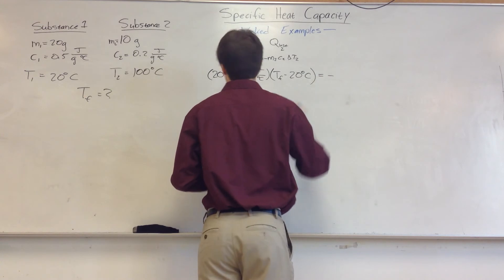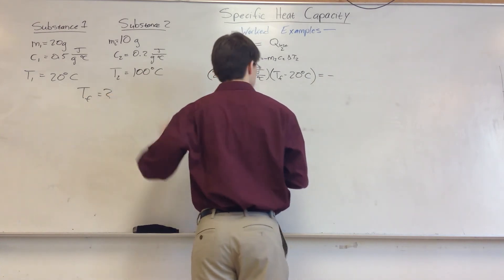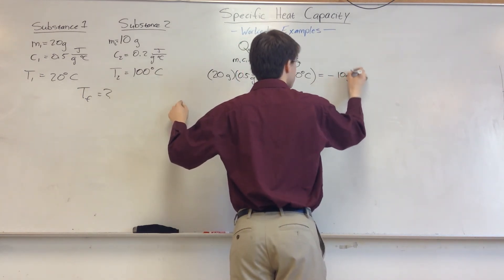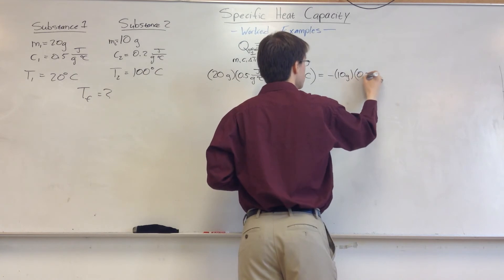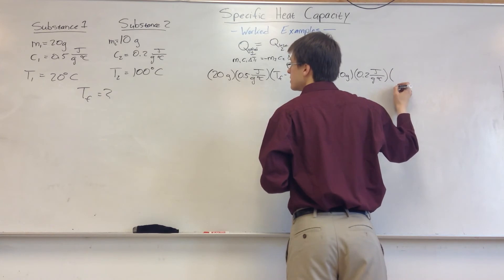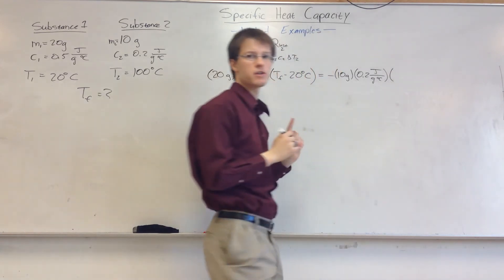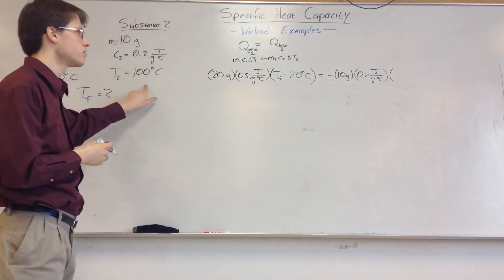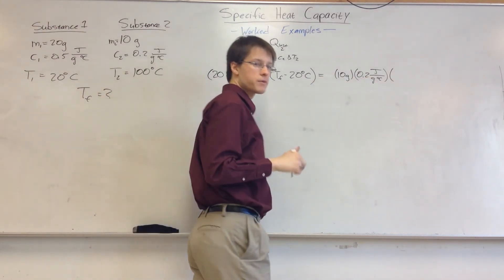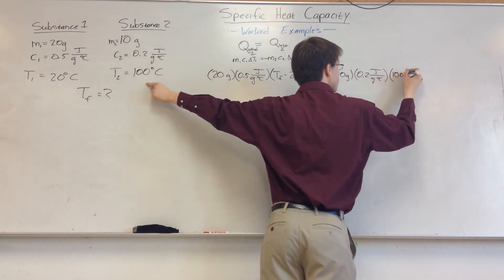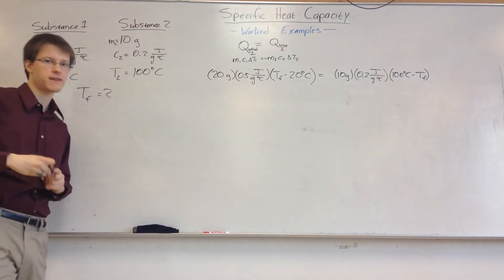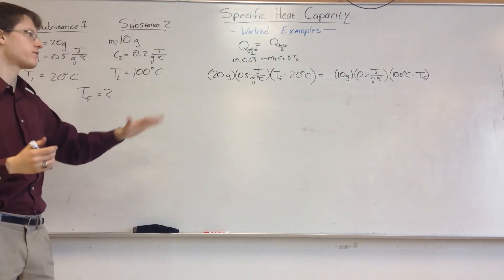For our other substance, it's going to lose heat. It's going from 100 to something lower than 100. So I'm going to say negative. M2 is going to be 10 grams. The heat capacity is 0.2 joules per gram degrees Celsius. And our change in temperature is going to be... And here's something we can do. We can say it's going to be TF minus 100. But we can also just put this negative sign in to our change in temperature and say it's initial, which is 100 degrees Celsius, minus our final. Otherwise we're going to get a negative answer anyways, and the negatives will cancel and still give us the same thing. So this is fine.